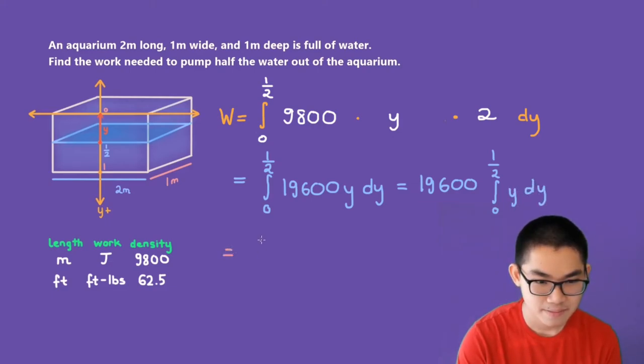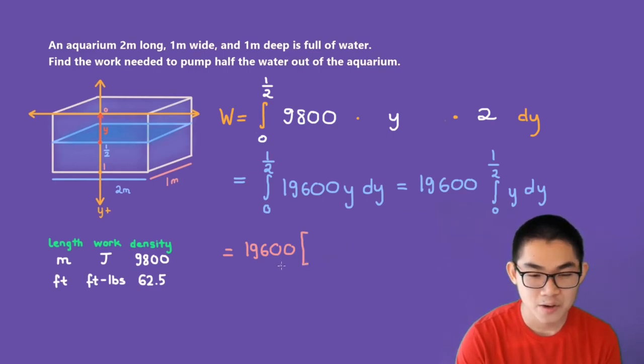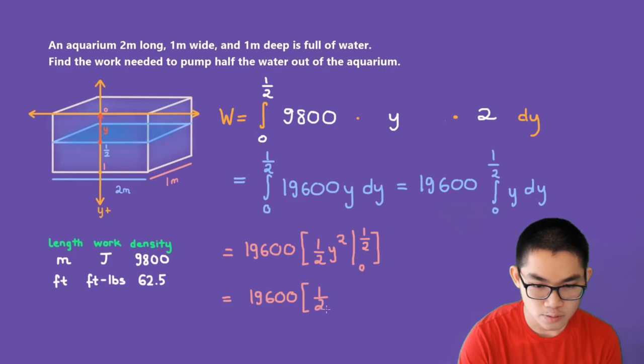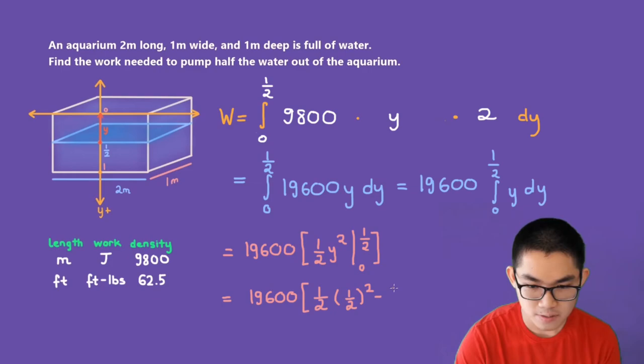This is the same as 19,600 times the antiderivative of y, which is 1 over 2 times y to the power of 2, evaluated from 0 to 1 over 2. This is the same as 19,600 times 1 over 2 times 1 over 2 to the power of 2 minus 1 over 2 times 0 to the power of 2.